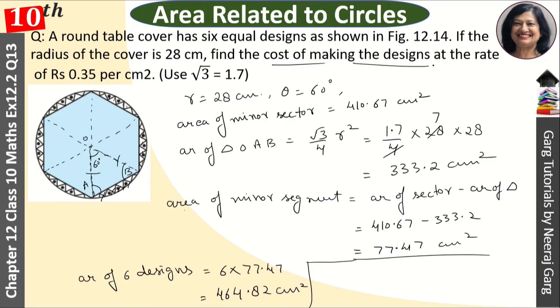And after this, what will we calculate? Cost of making the design at the rate of 0.35 rupees per centimeter square. So cost of making design, that is equal to 0.35 into 464.82, and this answer will come to rupees 162.68.